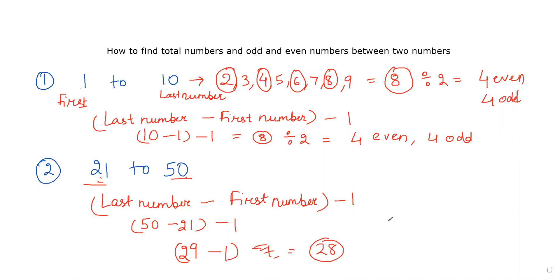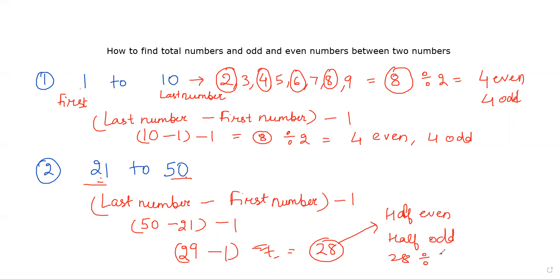Half of them would be even and half of them would be odd. So 28 divided by 2 gives 14 even numbers and 14 odd numbers.